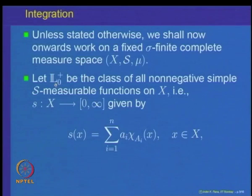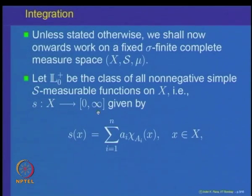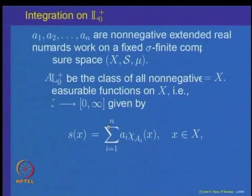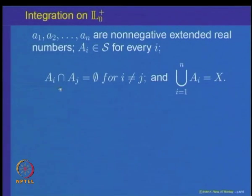That means all sets A such that mu of A is 0 implies that A and all its subsets are inside S. Let us denote by L-0-plus the class of all non-negative simple S-measurable functions on X. A non-negative simple measurable function s has the representation s(x) = sigma_{i=1}^{n} a_i times the indicator function of the set A_i, where the A_i's are pairwise disjoint sets in the sigma algebra S and their union equals X.